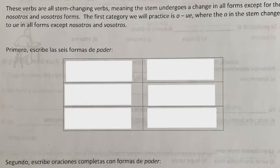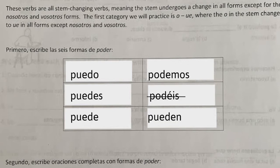For the activity here, I ask you to write the forms of the verb poder — so I will write those on the board. Poder is an O to UE stem changing verb, so change the O to UE: puedo, puedes, puedes, podemos. The vosotros form is podéis, and lastly, pueden.